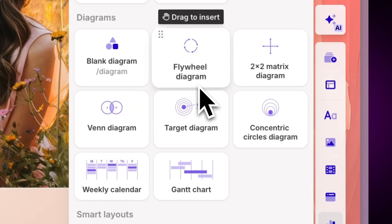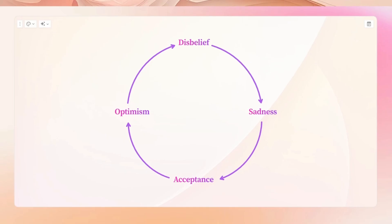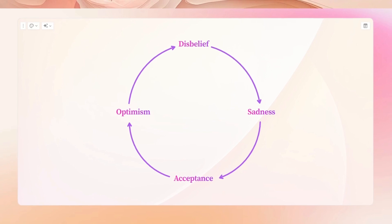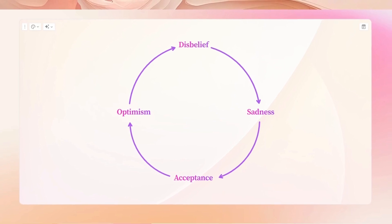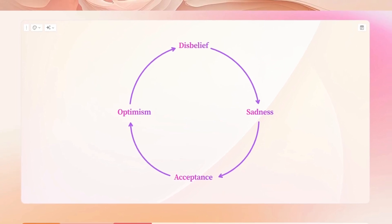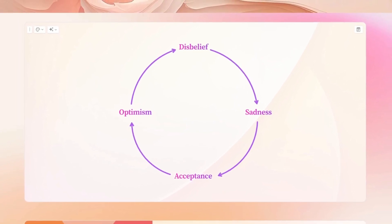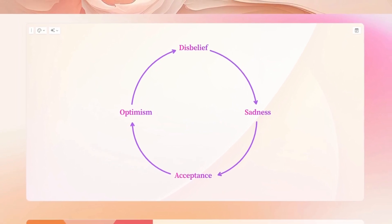Flywheel Diagrams are a great way to illustrate processes. They are often used in sustainable growth cycles since the process begins in one stage and finishes and restarts in the same one.